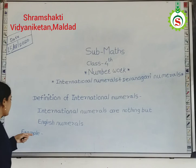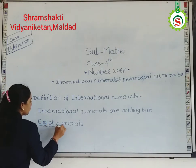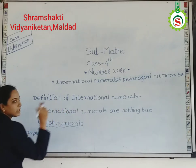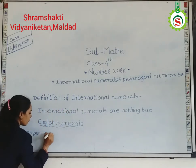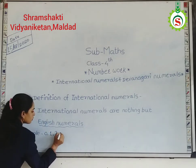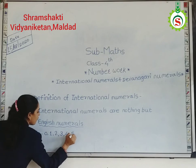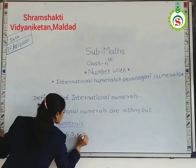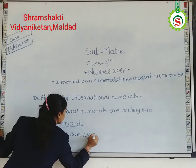Now students, some examples. You know all English numerals. Therefore, examples of international numerals are 0, 1, 2, 3, 4, 5, 6, 7, 8, 9.